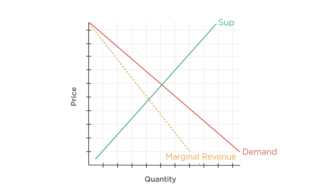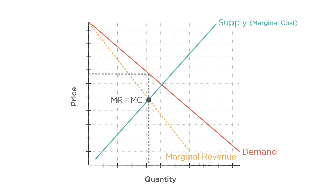The monopoly firm will choose to produce at a point where the marginal cost curve — otherwise known as the supply curve — intersects the marginal revenue curve. And it will choose a price that is higher than the marginal revenue, up here on the demand curve. Remember, even monopolists need to respect the demand curve.